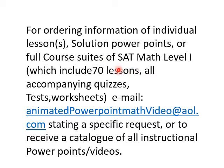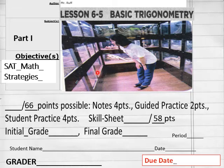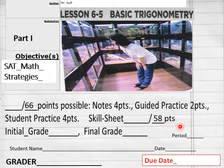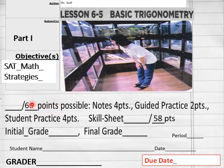Hello everybody, we're getting ready to do Lesson 6.5, SAT Math Level 1. Today, basic trigonometry of 6.5. You've got 58 points here on the tune-up sheet that follows this lecture. You have a whopping 66 points here of note-taking, so get prepared with your notepad.